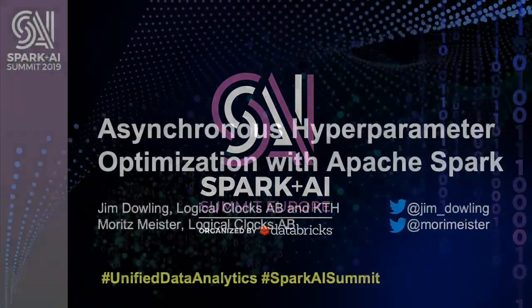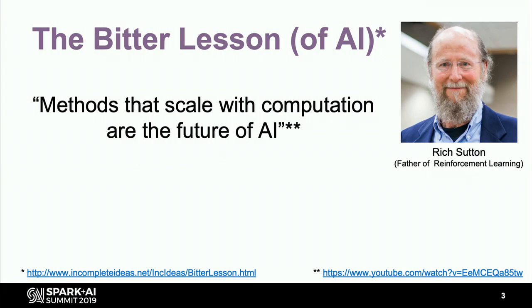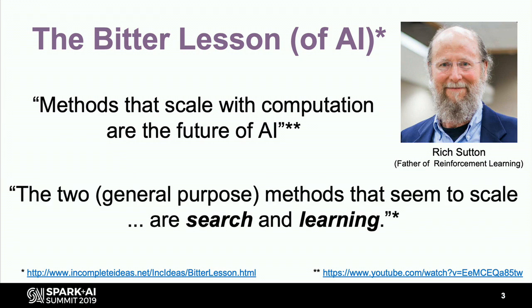Today we're going to talk about asynchronous hyperparameter optimization on Spark. I'll start with probably the most controversial essay in AI this year, by the father of reinforcement learning, Rich Sutton. He basically said do not add human intelligence to your AI applications — it's a waste of time. With more compute available, we can engineer features automatically. The two methods that scale well with available compute are search and learning.